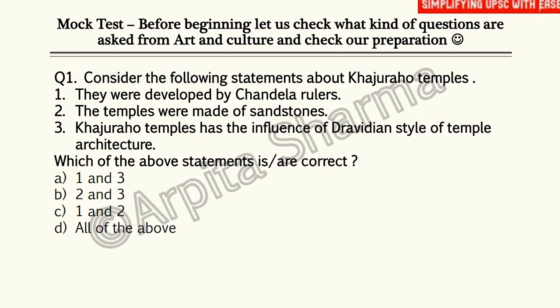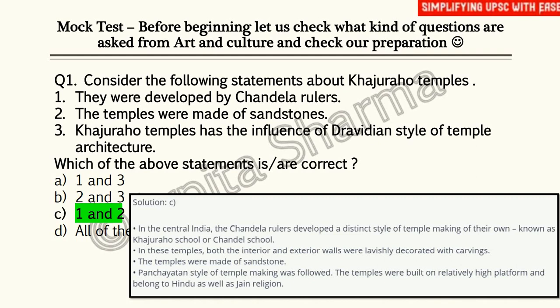Question number one: Consider the following statements about Khajuraho temples — (1) They were developed by Chandela rulers. (2) Temples were made of sandstone. (3) Khajuraho temples have the influence of Dravidian style of temple architecture. Which of the statements given above is or are correct? The correct answer is C — statements one and two are correct.